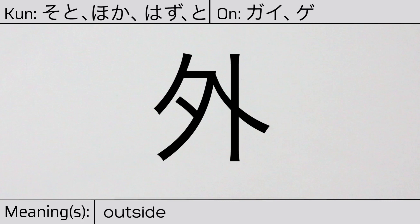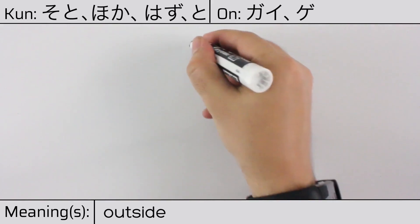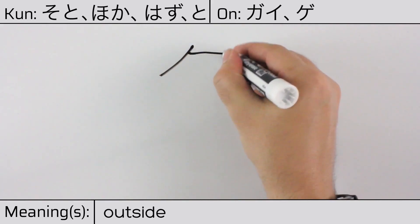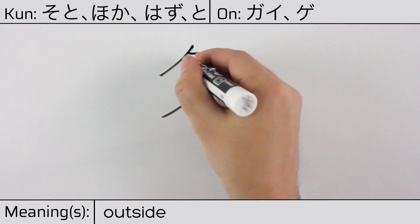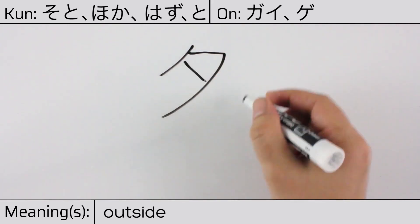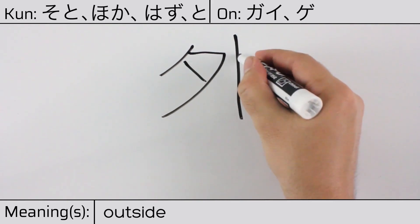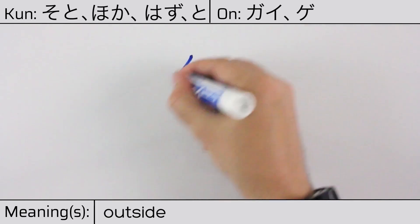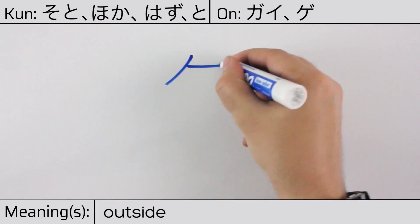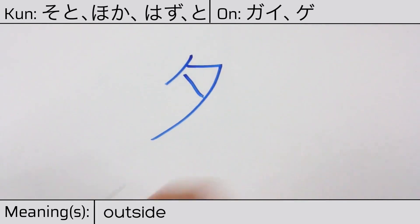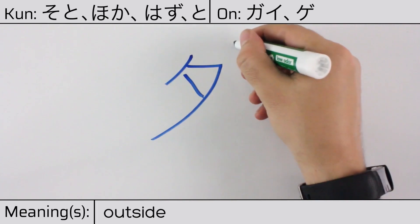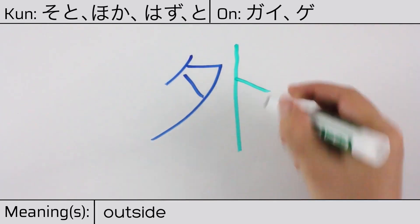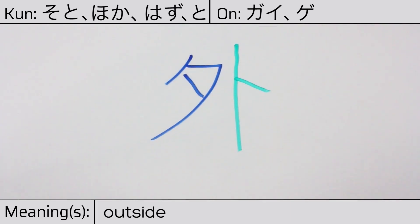Here is the stroke order. This character is made up of the following radicals or parts: Evening, or sunset, on the left. And katakana to, or the oracle radical, on the right.